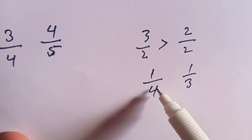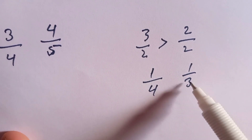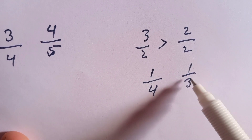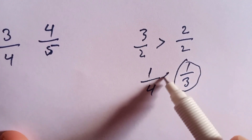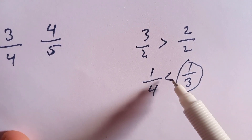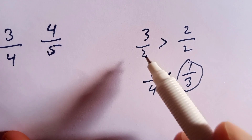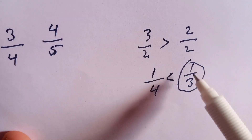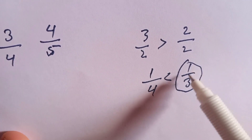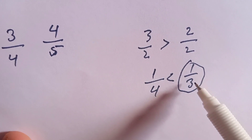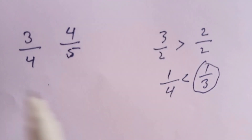Here the denominator is 3 and here the denominator is 4, and 4 is greater than 3, so we say that 1 over 3 is greater than 1 over 4. So the fraction size depends on the denominator. The same principle will be applied to compare our original fractions.